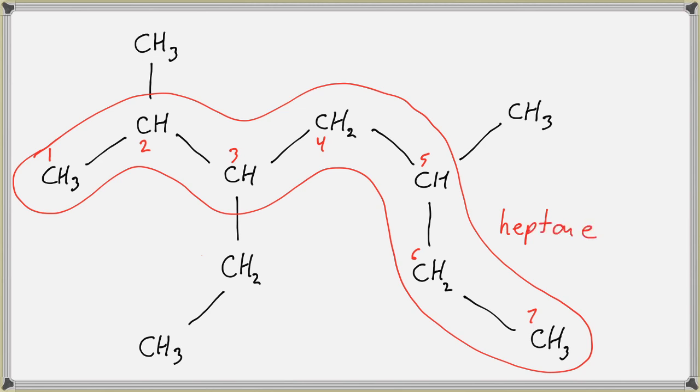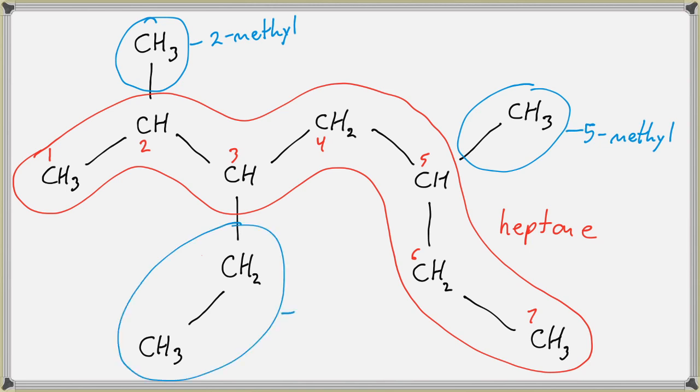Now for my branches, I have two one-carbon branches. So this one is a 2-methyl. This is a 5-methyl. And this branch is a two-carbon branch on three, so it's a 3-ethyl.